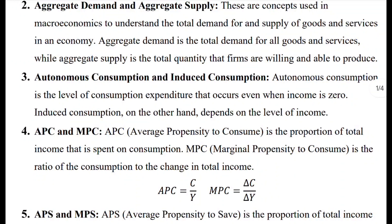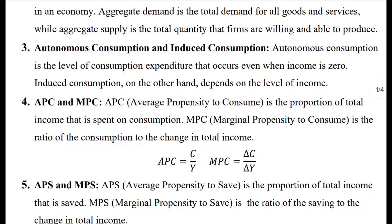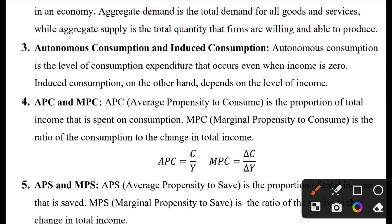Autonomous consumption and induced consumption. Autonomous consumption is the level of consumption expenditure that occurs even when income is zero — when income is zero, it is autonomous consumption. Induced consumption depends on the level of income; the level of income determines the level of consumption.